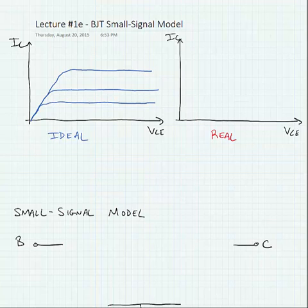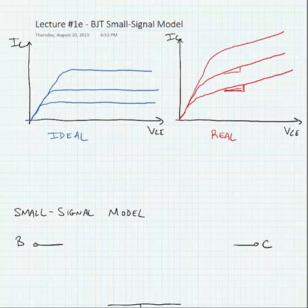Now a real transistor doesn't function quite like this. So if we look at a real transistor, and I'm going to exaggerate the slopes a bit, the output is going to have some slope. So we're going to see that the output current will change with the collector to emitter voltage to some degree. And I've exaggerated this quite a bit. I also haven't put scale on, so it doesn't really matter.